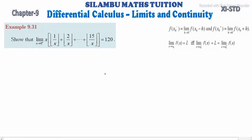Hi students, this is Salambo Max Tuition, 11th standard Example 9.31. Show that limit x tends to 0 plus, x times the sum of greatest integer function of 1/x plus greatest integer function of 2/x plus up to 15/x, multiplied by x gives value 120 — we need to prove this.